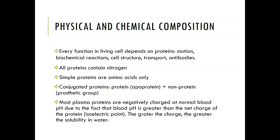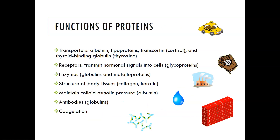Most plasma proteins are negatively charged at normal blood pH, because the blood pH is greater than the isoelectric point of the protein. The greater the charge, the greater the solubility in water. Many proteins function as transporters — albumin transports various substances, lipoproteins transport lipids, transcortin transports cortisol, and thyroid-binding globulin transports thyroxine.